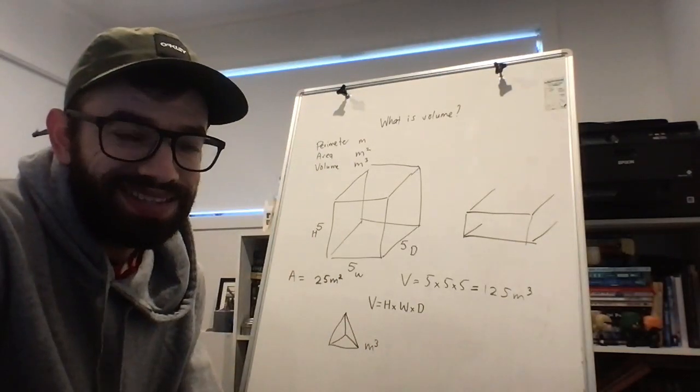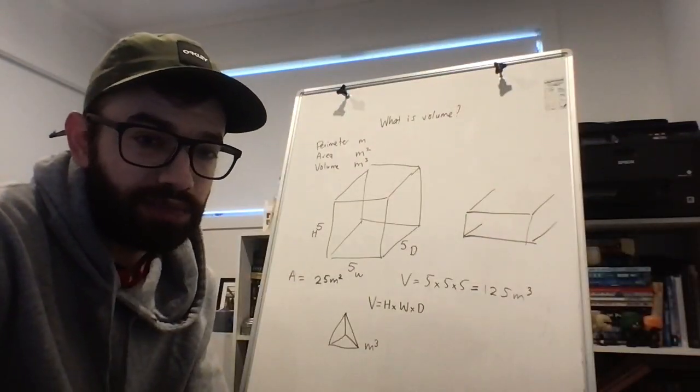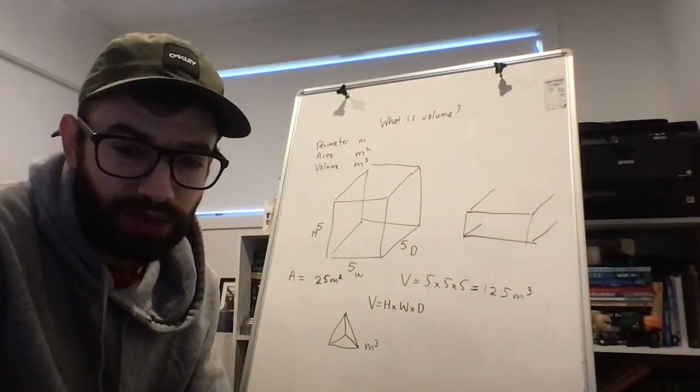So volume is the space that a three-dimensional shape covers, and it's adding one extra dimension from area. Thanks for watching, and I'll see you guys in the next video.